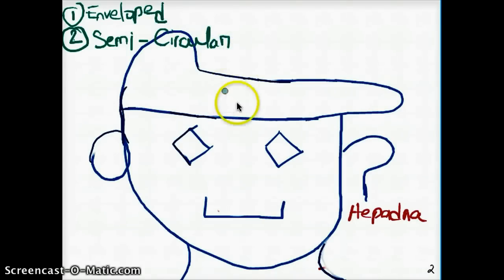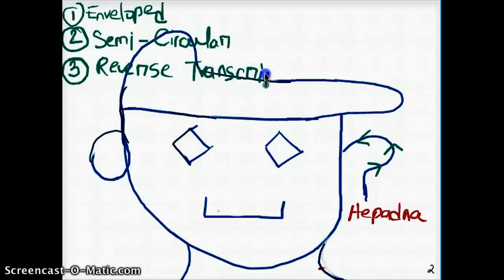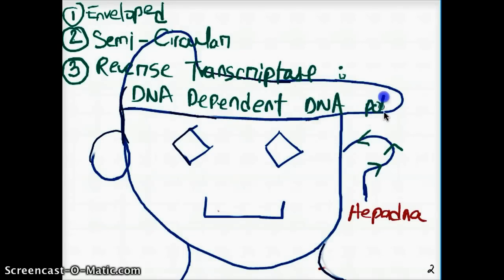That's part two. Number three is they are going to replicate inside the nucleus. And the enzyme that they are going to be using is called reverse transcriptase. See how the arrows are going backwards. They're going to be using reverse transcriptase with the help of using the enzyme DNA dependent DNA polymerase.